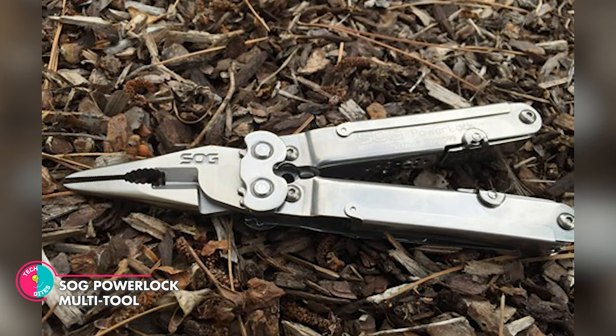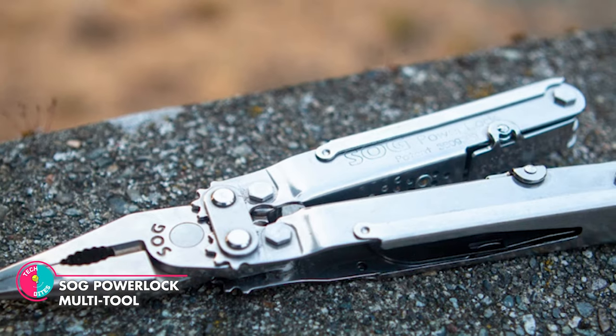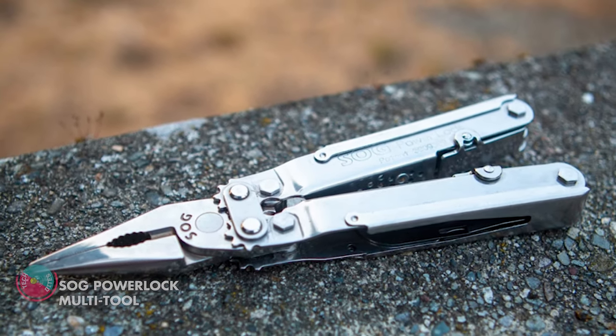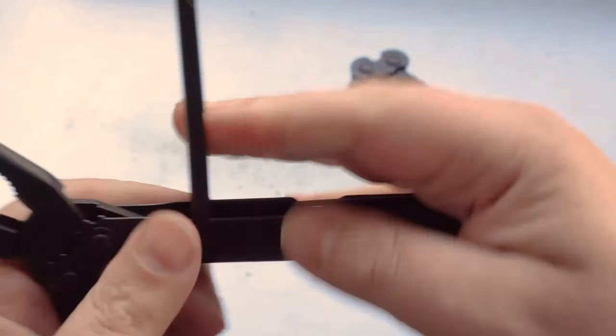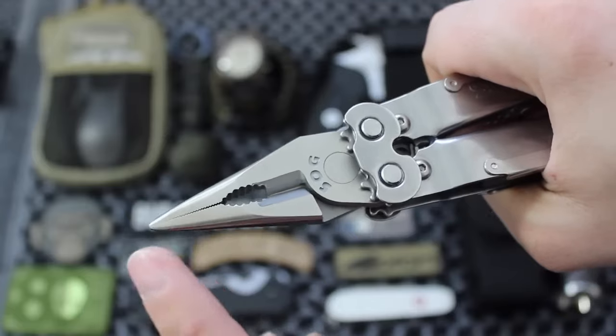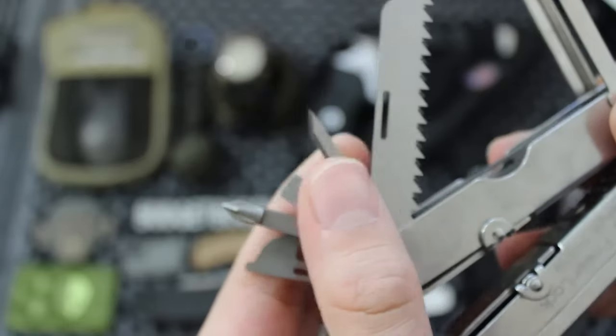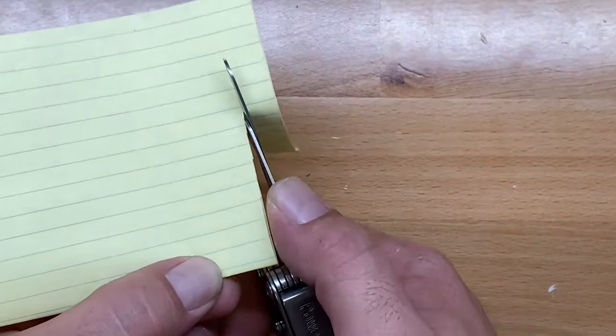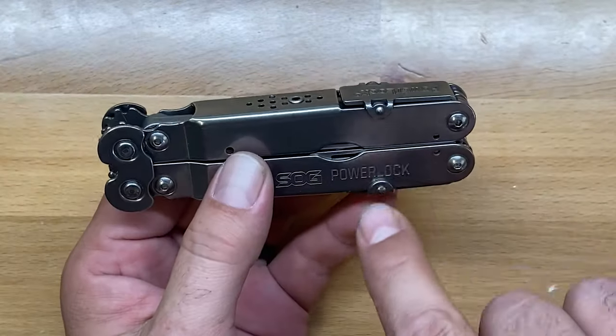SOG Power Lock Multi-Tool. With its pliers, screwdriver, scissors, knife, and wire crimper, this large, stainless steel tool is the ultimate powerhouse for any job. But this is no ordinary tool. It's explosive ordnance disposal-ready, meaning it's built to withstand even the toughest conditions and challenges. Whether you're a soldier, first responder, or just someone who loves to be prepared for anything, this multi-tool set is a must-have in your arsenal.